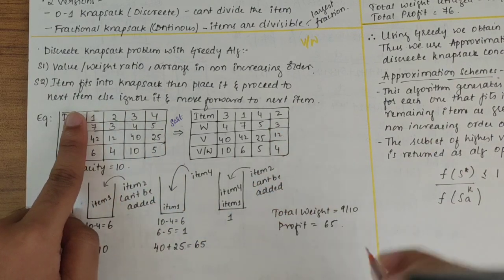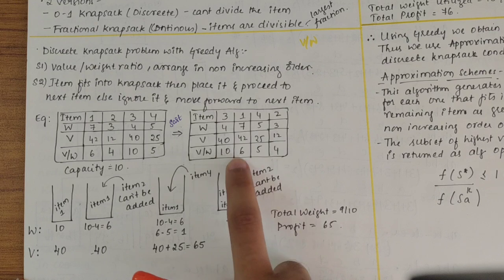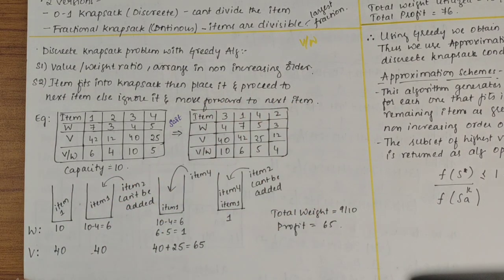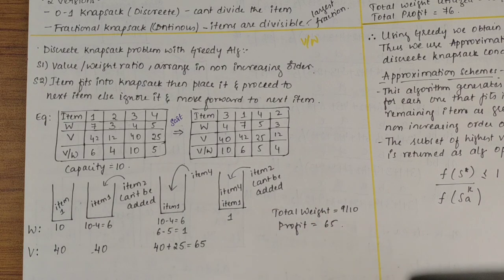I should get it to decreasing order, so I'll sort this. When I sort this, item 3 will come first, followed by item 1, then item 4 and then item 2. That is V by W ratio 10, 6, 5, 4. This is sorted now. Capacity weight is 10, they have specified here.